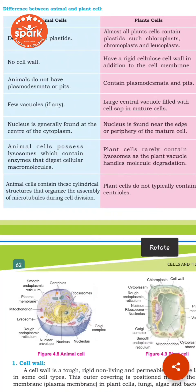Animal cells have few vacuoles, if any. In contrast, plant cells have many large central vacuoles. These large central vacuoles contain cell sap. In a mature plant cell, the large central vacuole is filled with cell sap.